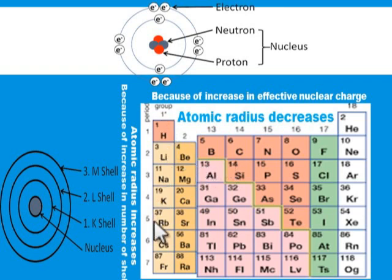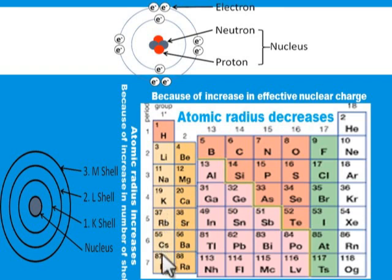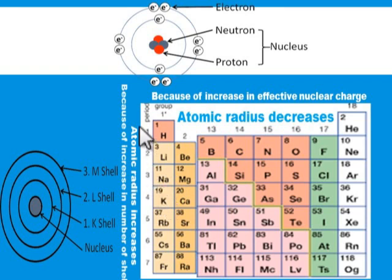In the group — group 1, group 2, group 3, group 4, group 5, group 6, group 7, and finally group 8, also called group 0 — in group 1 we have hydrogen, lithium, sodium, potassium, rubidium, cesium, and francium. If you move down the group, the atomic radius increases. Why? Because of an increase in the number of shells. Hydrogen has only one shell, lithium has two shells, sodium has three shells, potassium has four shells. As the number of shells increases, the atomic radius also increases. What accounts for the increase in atomic radius as you move down the group is increase in the number of shells.